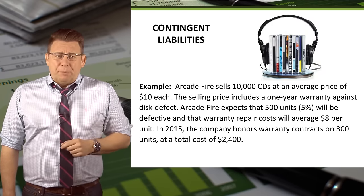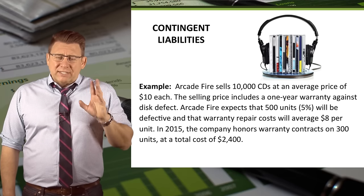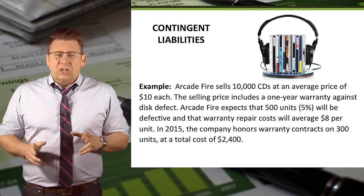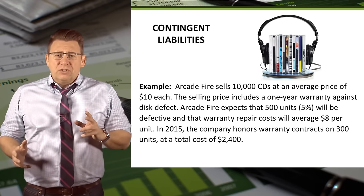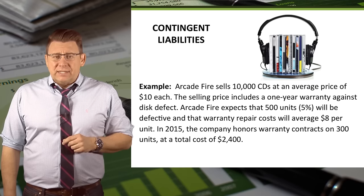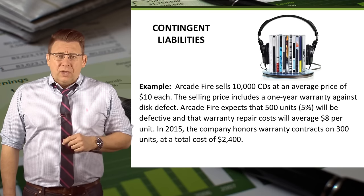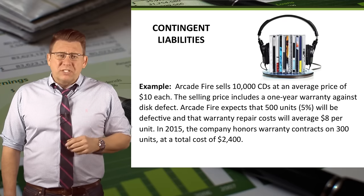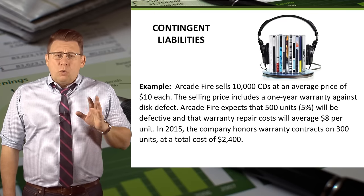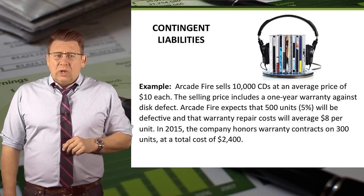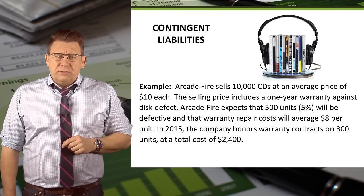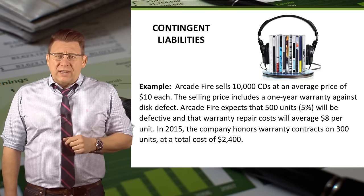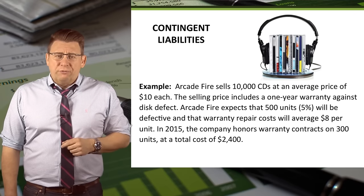So let's look at an example. Arcade Fire sells 10,000 CDs at an average price of $10 each. The selling price includes a one-year warranty against disc defect. Arcade Fire expects that 500 units, or 5%, will be defective and that the warranty repair cost will average about $8 per unit. In 2015, the company honors warranty contracts on 300 units at a total cost of $2,400.